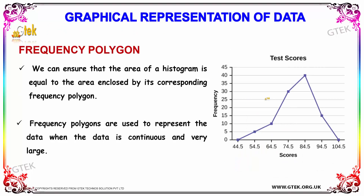The midpoints at each end are joined to the immediately lower or higher assumed class interval of zero frequency. We can ensure that the area of the histogram is equal to the area enclosed by its corresponding frequency polygon. Frequency polygons are used to represent data when the data is continuous and very large.